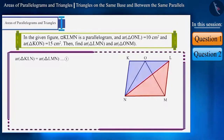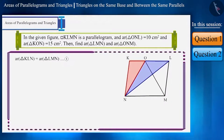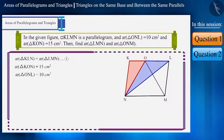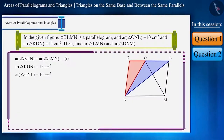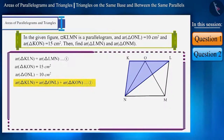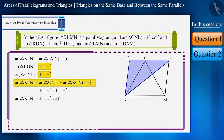Let's call this equation 1. By looking at the figure, triangle KLN is made of triangles KON and ONL combined together, and we know the areas of triangles KON and ONL. Therefore, by adding the areas of these two triangles, we get the area of triangle KLN as 25 cm².